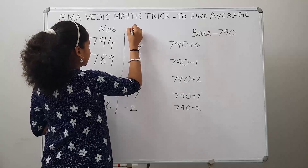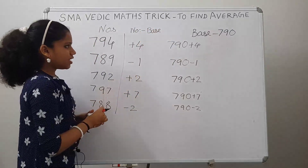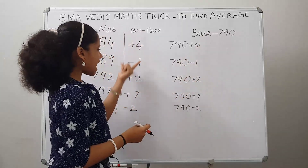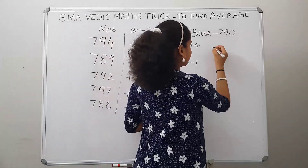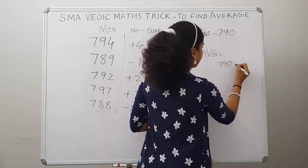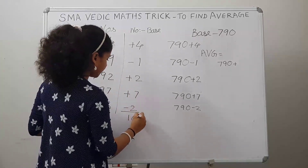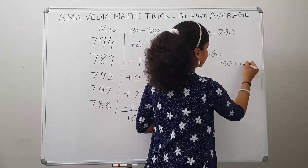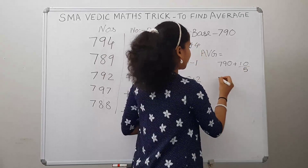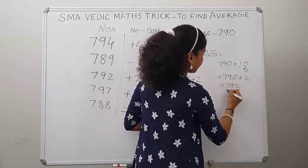This is the difference between the numbers and the base number. Now to find the average, we add the base number to the average of this difference column. The average equals 790 plus the sum of these differences, which is 10, divided by the number of terms, which is 5. So 790 plus 10 divided by 5 equals 790 plus 2, which equals 792. We got the same answer!